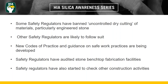Up to now the main focus has been on the fabrication of stone benchtops because this is where most cases of silicosis have occurred. Some authorities have also started to check other construction activities that work with products containing crystalline silica, such as concrete and autoclaved aerated concrete panels. Most Australian workplace health and safety authorities have prepared safety alerts and guides online. Queensland has developed a code of practice specific to stone benchtops, Victoria is developing a compliance code, Western Australia has developed a checklist, and SafeWork Australia has published a national safety guide. Most states and territories have developed resources on their websites.